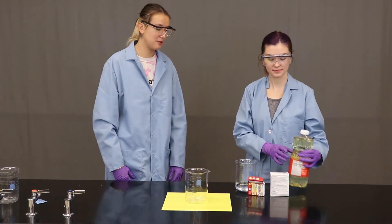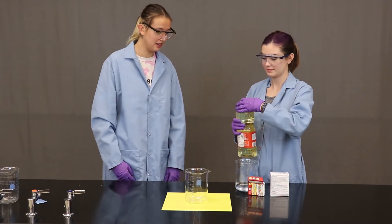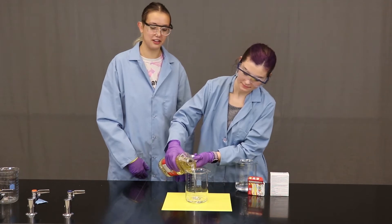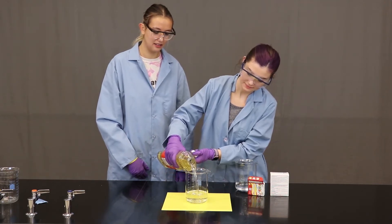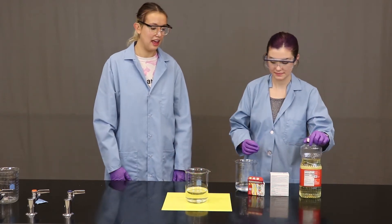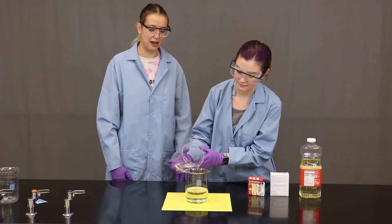Next we're going to do a DIY lava lamp. For this experiment you'll need some oil. We're using canola oil today, adding that to our beaker first. And next we're going to add some water—it's just regular old tap water.